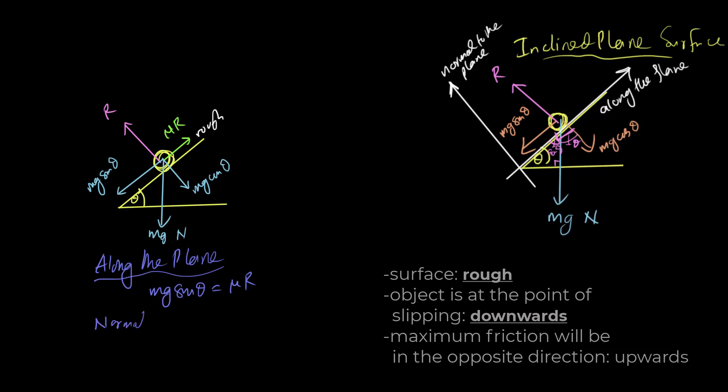In the case of normal to the plane, remember — even if the object was moving, not in limiting equilibrium, normal to the plane will still be in equilibrium. Even if this is a car going uphill and it's moving, normal to the plane will be equal because it won't move upward or downward. It will always be in equilibrium, so R equals mg cos theta.